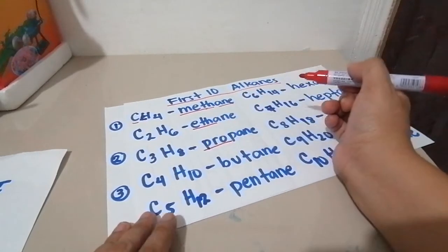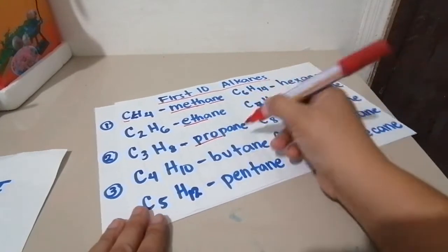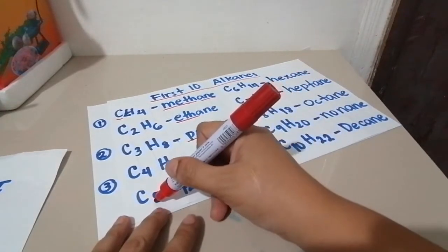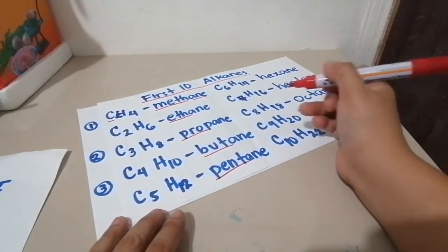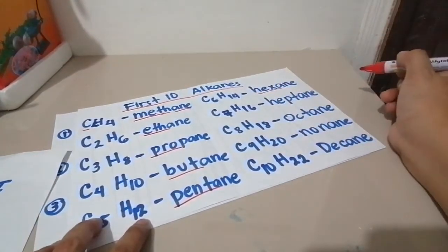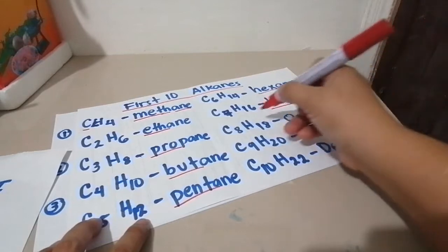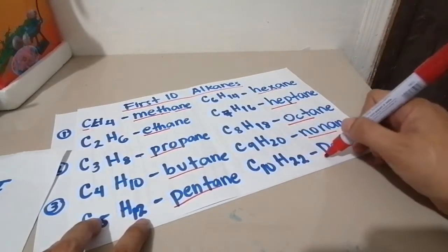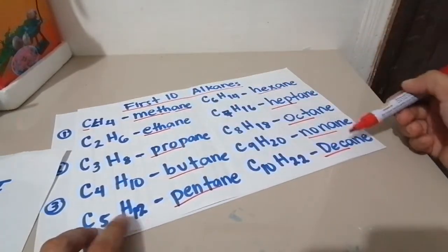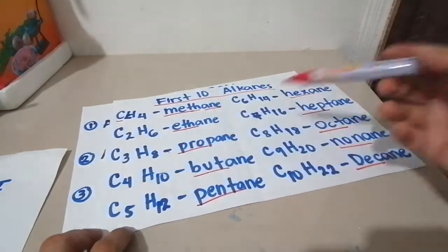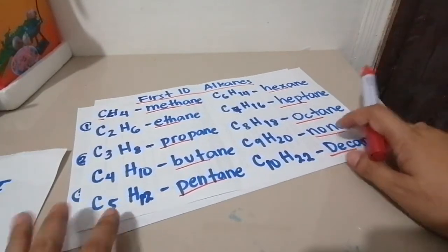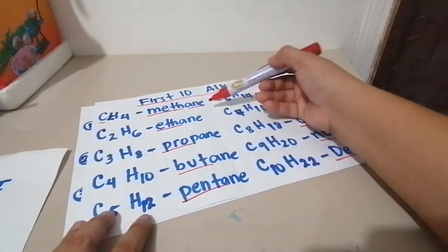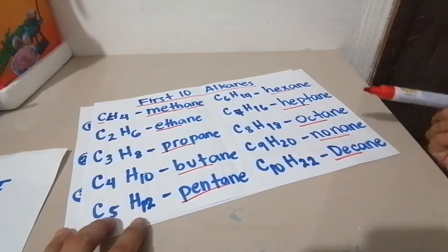3 carbon is prop, 4 carbon is but or buta, 5 carbon is penta, 6 is hexa, 7 is hept, 8 is oct, 9 is nona, and 10 is deca. These are the prefixes we'll use to identify or indicate the number of carbons. Since all of these are alkanes, all their endings are -ane because they are alkanes.